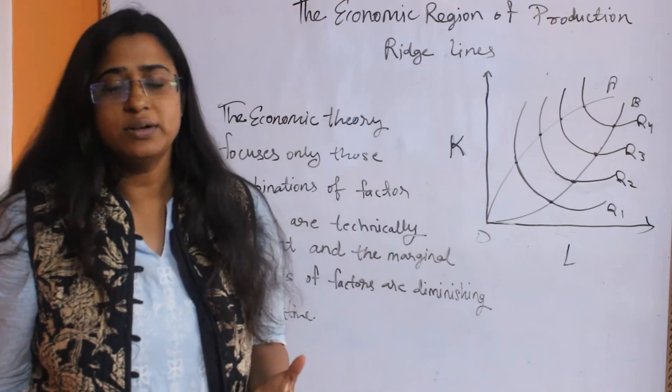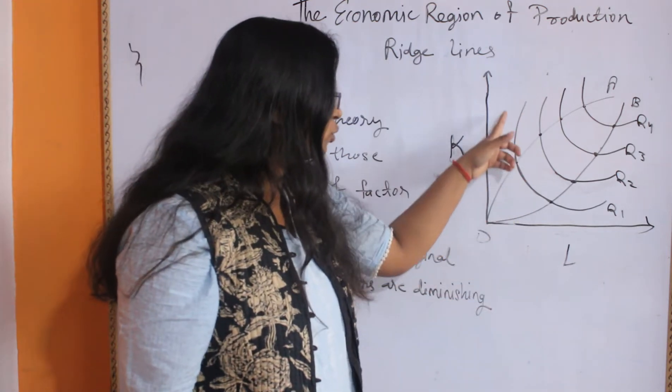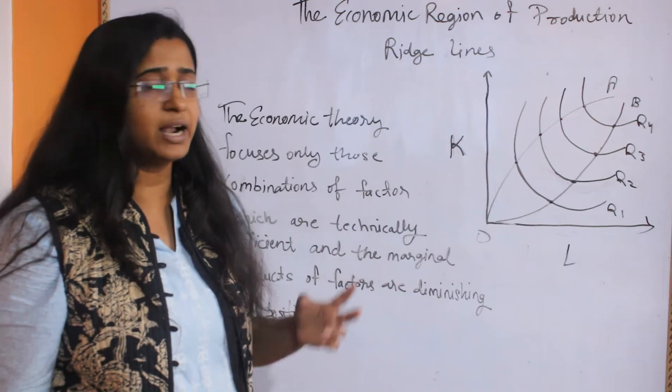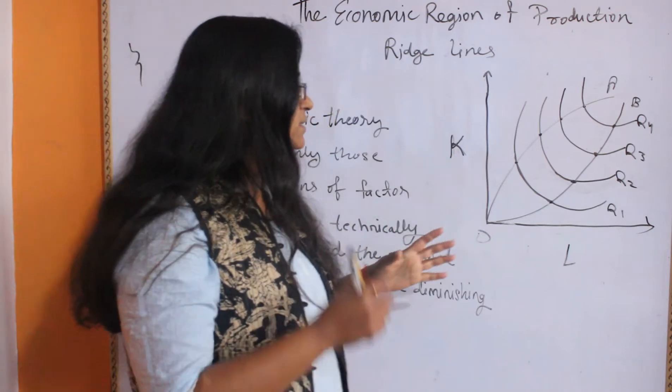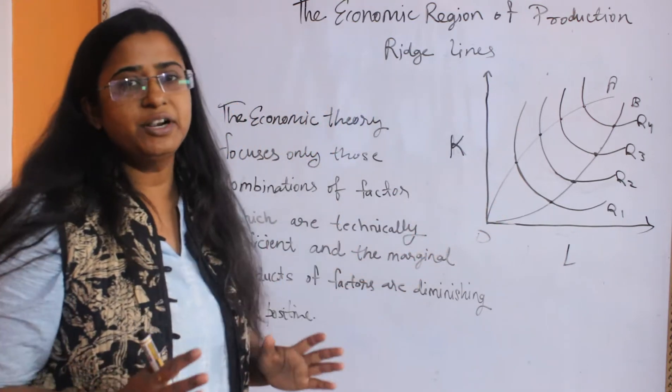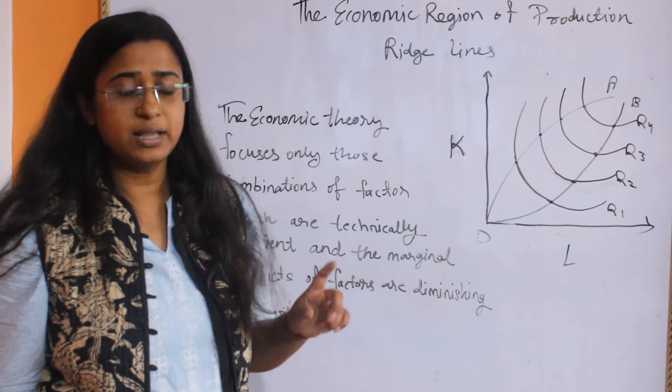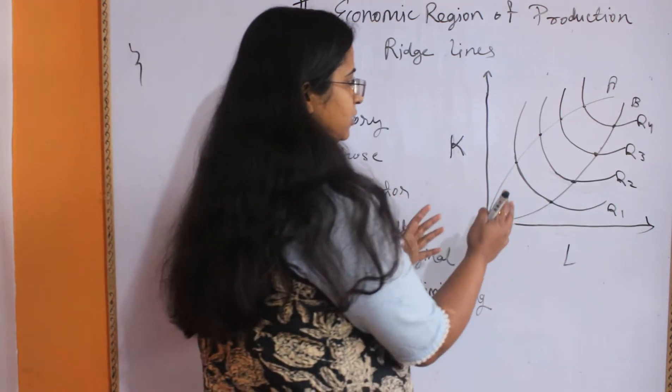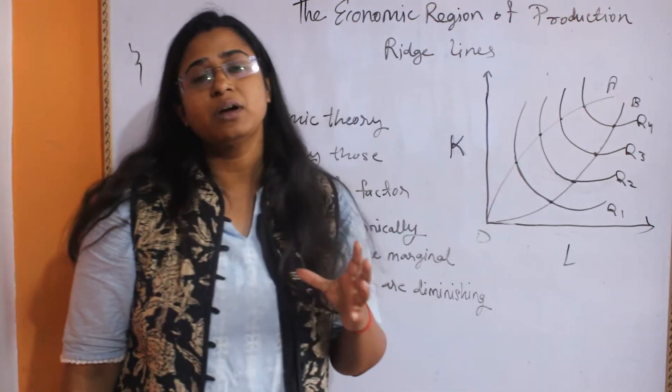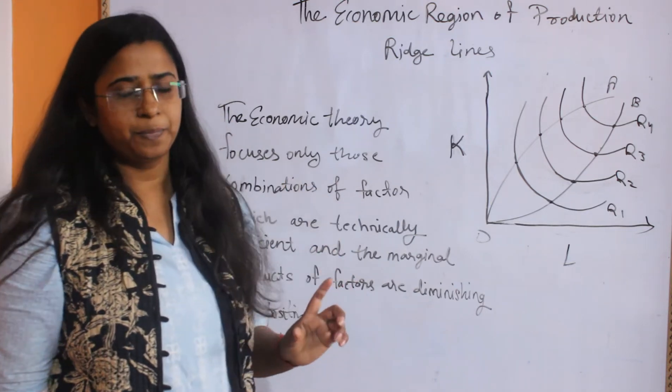These isoquants suggest that the level of output is the same throughout this particular isoquant with different combinations of the two factors of production, capital and labor. But you can see that the isoquant over here has a definite region which is convex to the origin. You know that the property of isoquants is that they should be convex to the origin. But here you can see that there are certain particular points after which this isoquant gets positive, or the slope of this isoquant no longer has a negative slope.